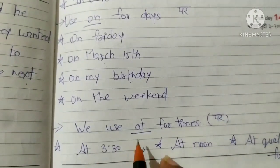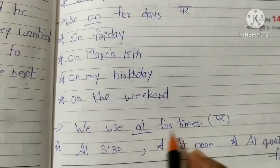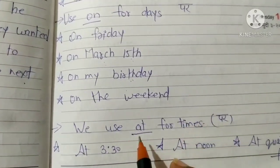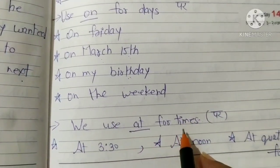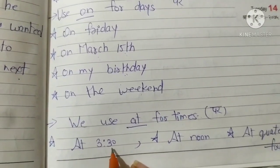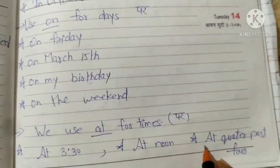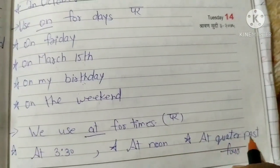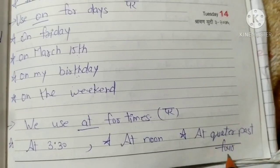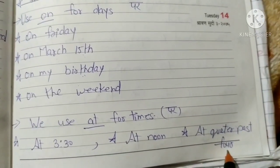We use 'at' for times — 'at' means 'par'. We use 'at' for time. For example: 'at 3:30', 'at noon', 'at quarter past four' (that is, quarter past four, meaning pone char).